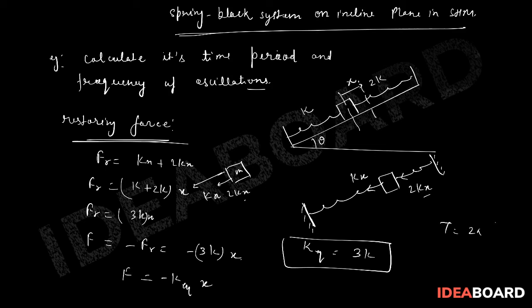The formula for time period is T = 2π√(m/k_equivalent). So the time period will be T = 2π√(m/3k).